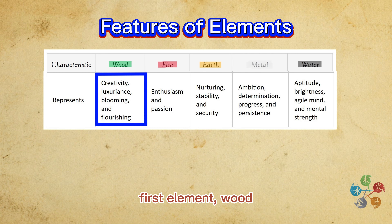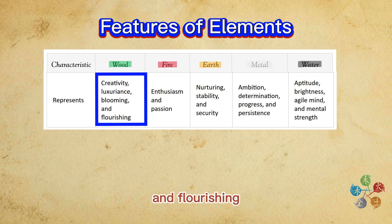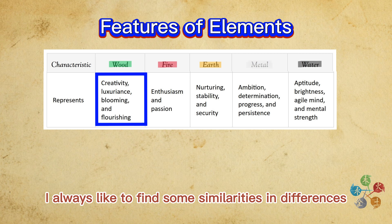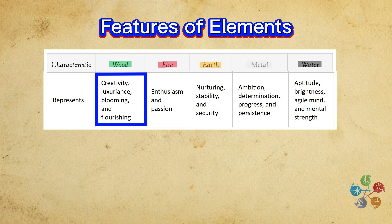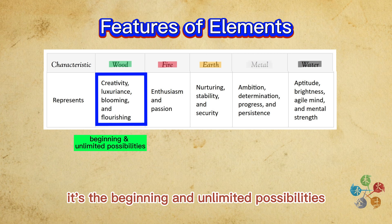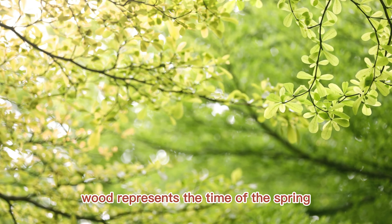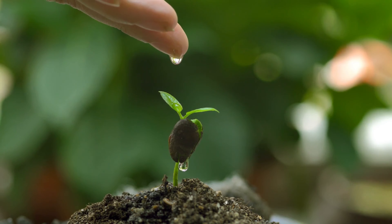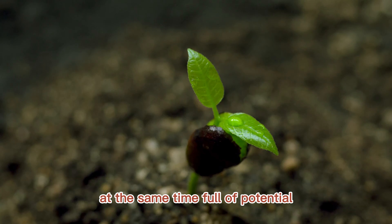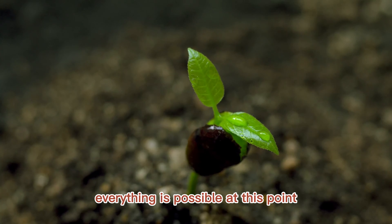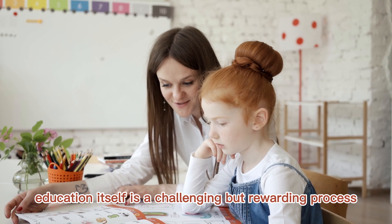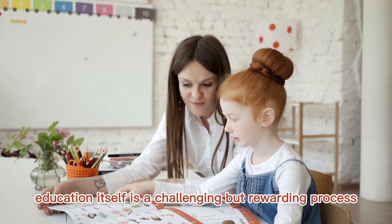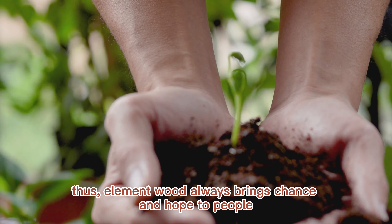First element: Wood. Wood represents creativity, luxuriance, blooming, and flourishing. Think about what all these characters have in common — it's the beginning and unlimited possibilities. Wood represents the time of spring, when everything starts to sprout, full of uncertainty but at the same time full of potential. Everything is possible at this point, depending on which direction you want to go. Wood is associated with education, which is a challenging but rewarding process. Thus, element wood always brings chance and hope to people.